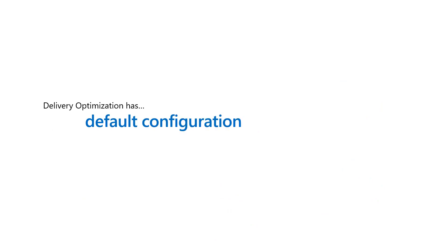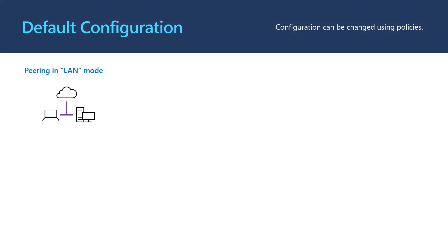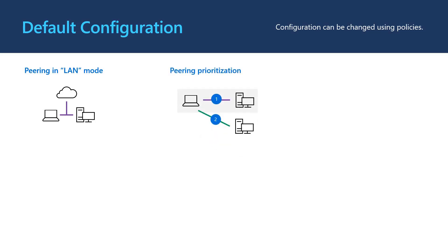Delivery Optimization has a set of default configurations that can be overwritten depending upon your organizational needs. We'll cover some of these configurations in more detail in other videos. Devices are configured using the default LAN peering mode, meaning devices with the same external IP addresses are considered in the same peering group. Peers are identified using external IP addresses. Those in the same subnet will be prioritized to help ensure the closest peers are chosen, but will not be restricted to do so by default.